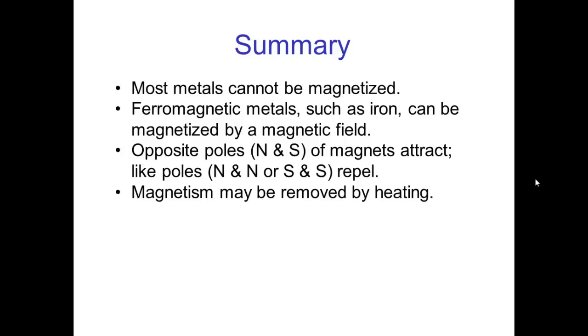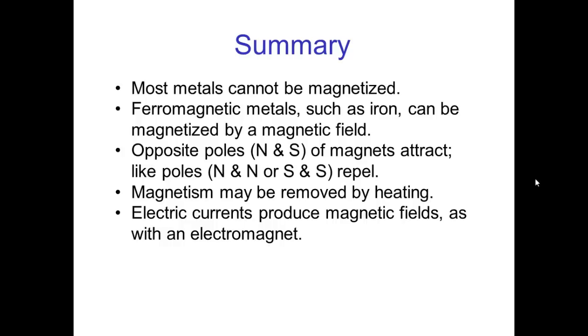Magnetism may be removed by heating. Electric currents produce magnetic fields like we saw in the electromagnet. The earth's core acts as an electromagnet and again, we know that it's not a permanent magnet because it's so hot.